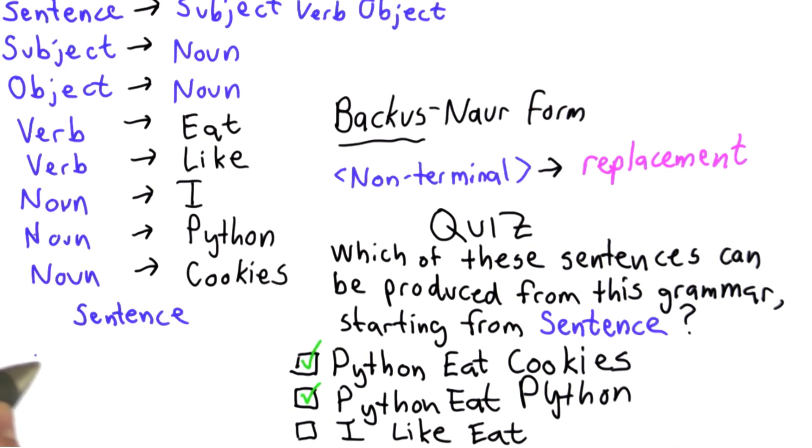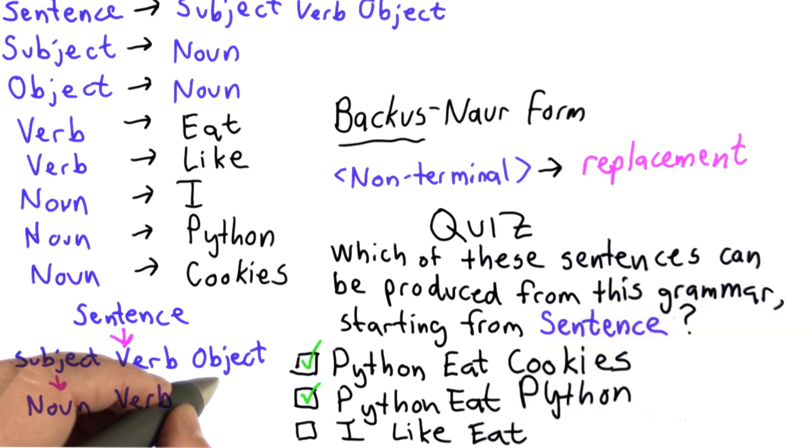If we start from sentence, we only have one rule from sentence, so we're always going to end up with subject, verb, object. We also only have one rule from subject and one rule from object, so we're always going to end up with noun, verb, followed by object, which also is replaced with noun.